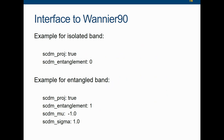How would you use this instead of having the 'begin projections' block? For the isolated band, there's no parameter whatsoever — all you need is 'SCDM projection = true' and 'SCDM entanglement = 0', meaning isolated band, and that's it. For the entangled band, you select case one or two and give the mu and sigma parameters. It becomes a lot easier to tune than before. Usually, you can safely set mu to be the Fermi surface.